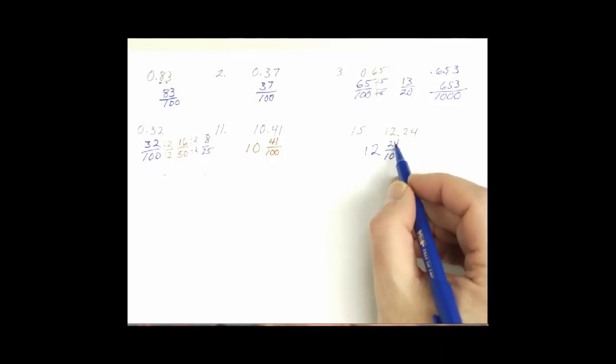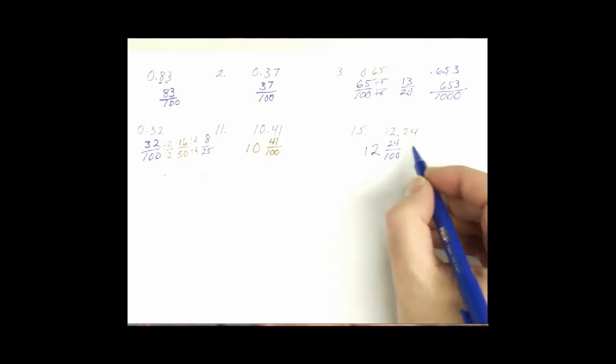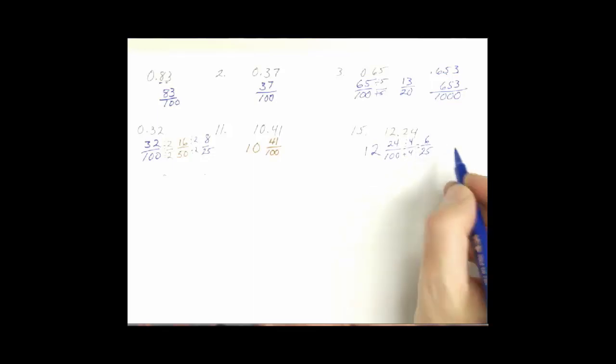Well, I know that 4 goes into both 24 and 100. So let's take 4 this time to see if that was the biggest one. 4 goes into 24, 6. 4 goes into 100, 25. And we are reduced the whole way. So then our total answer is going to be 12 and 6 25ths.